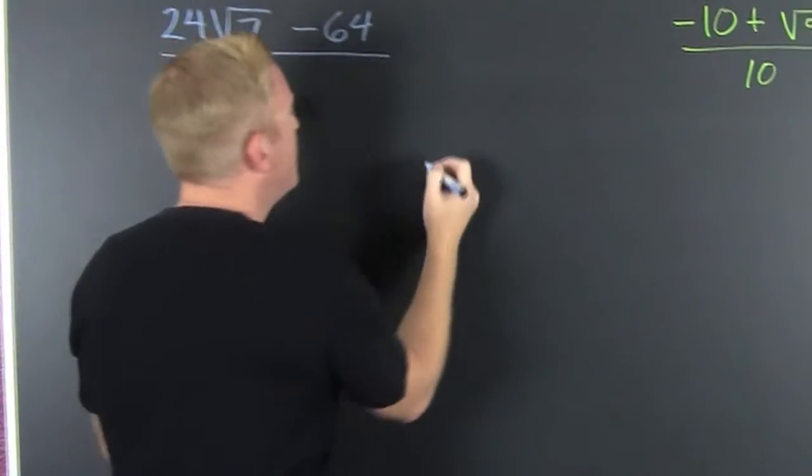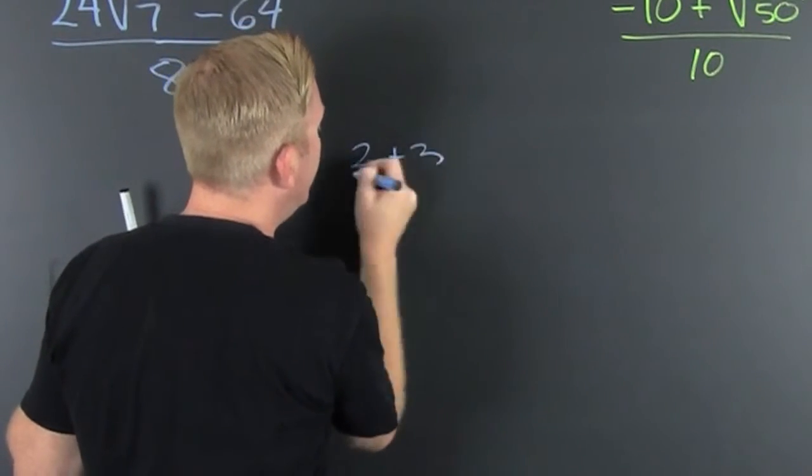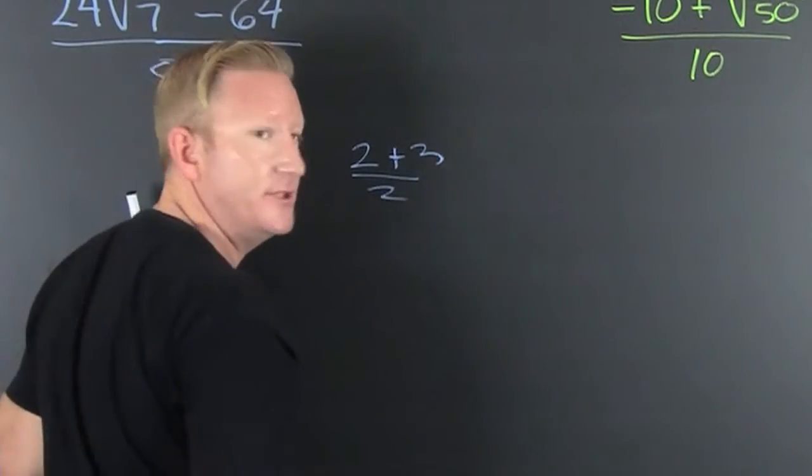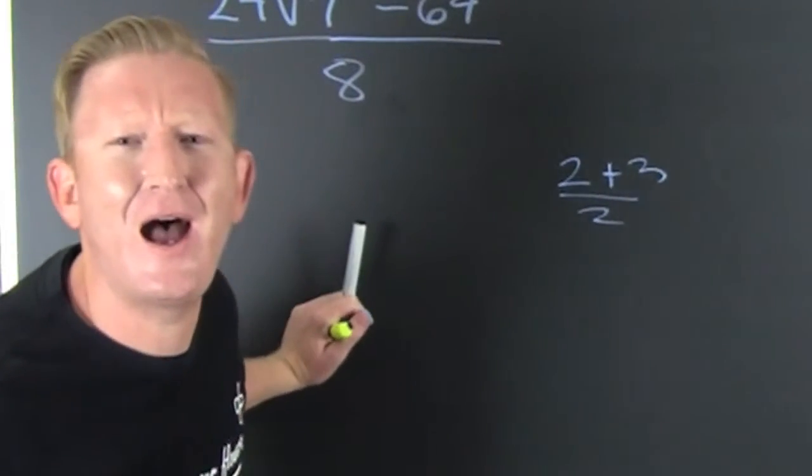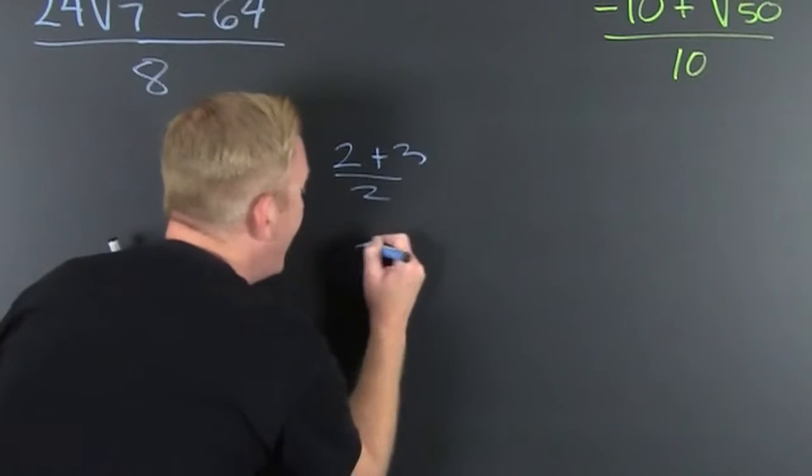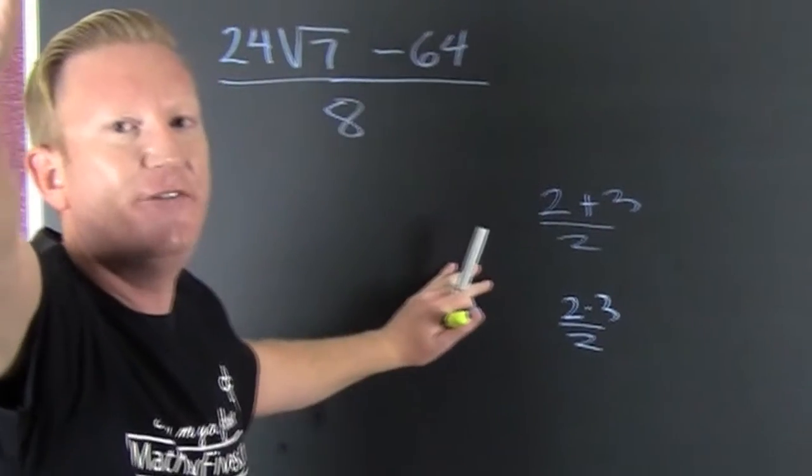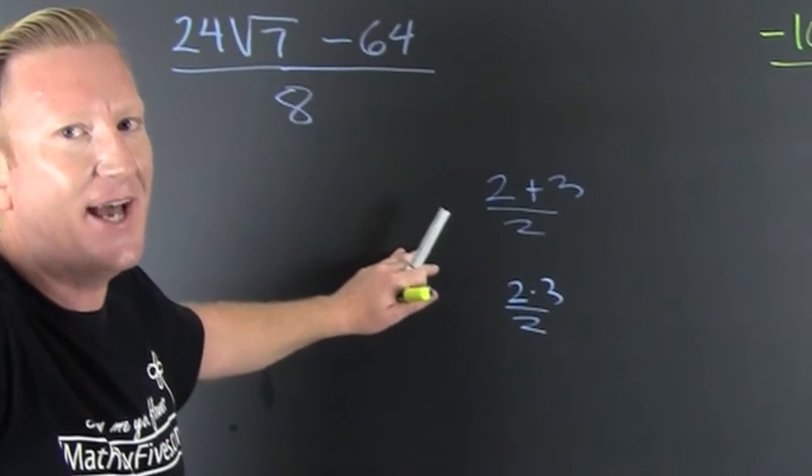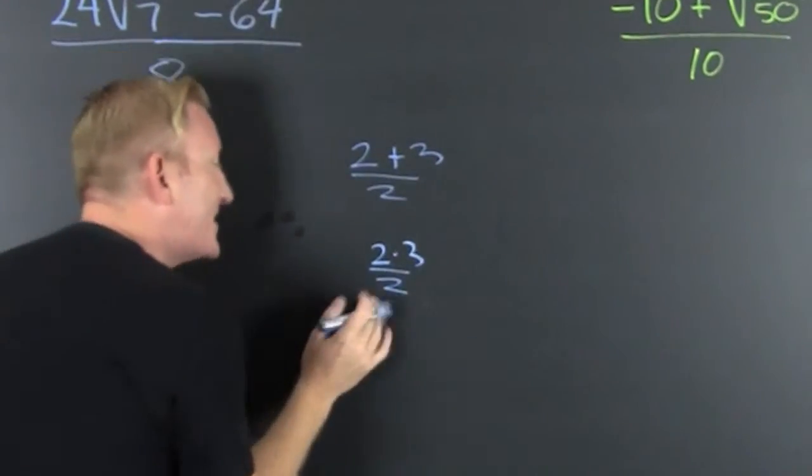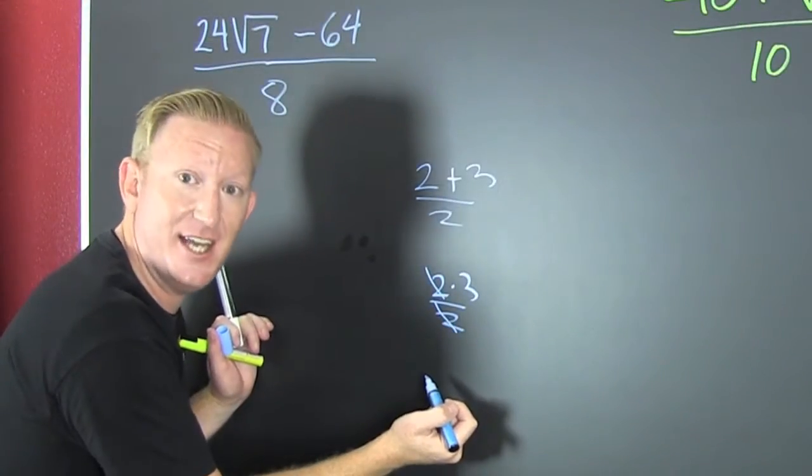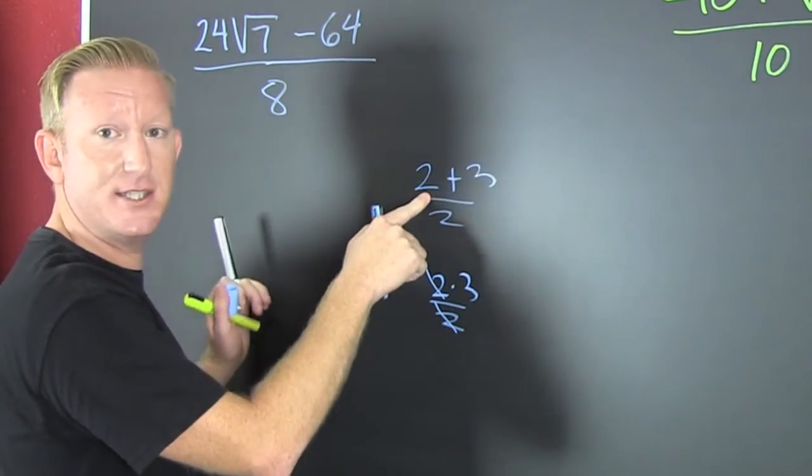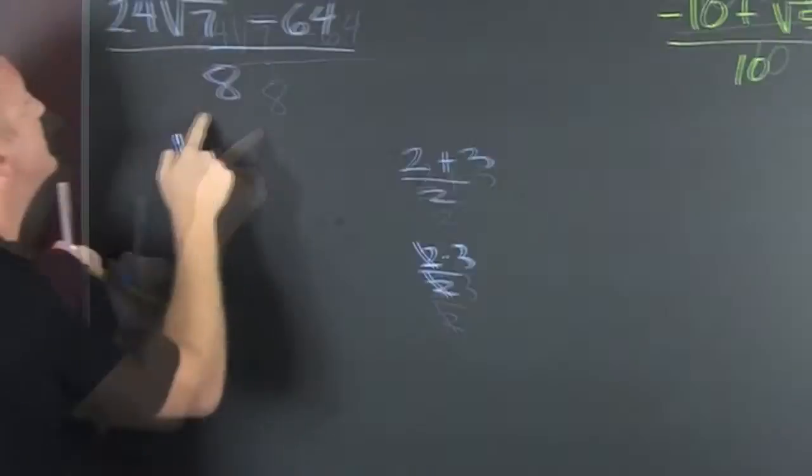Wait! It's a trap! If I have 2 plus 3 over 2, can I just reduce those 2s? No! If I had 2 times 3 divided by 2, can I reduce those 2s? You're feeling a little uncomfortable. I get that. But yes, I can because it's multiplication. I can't because it's addition.